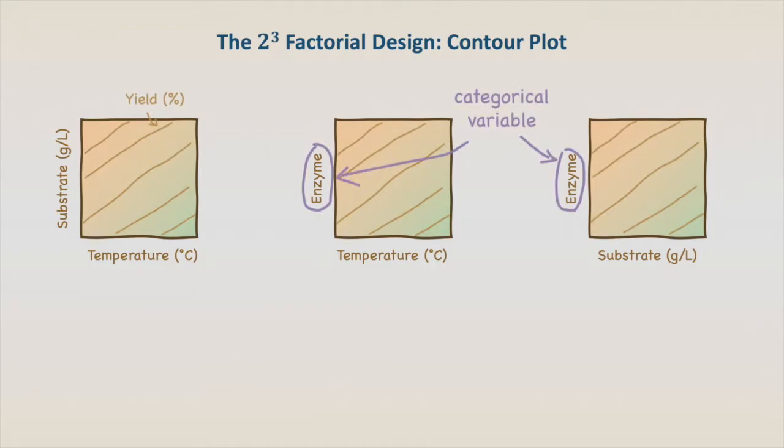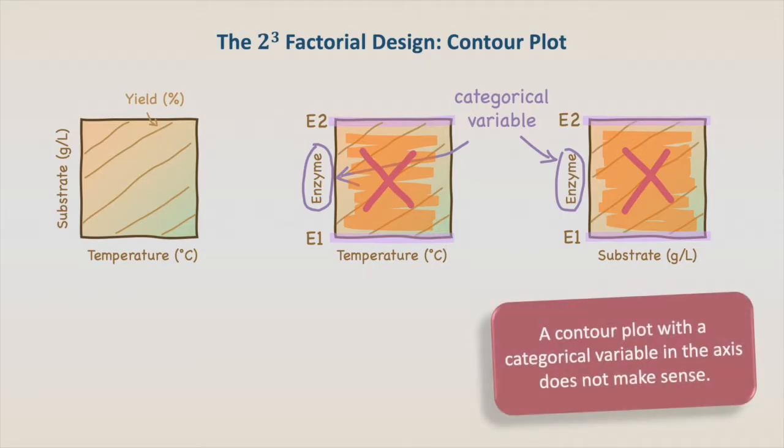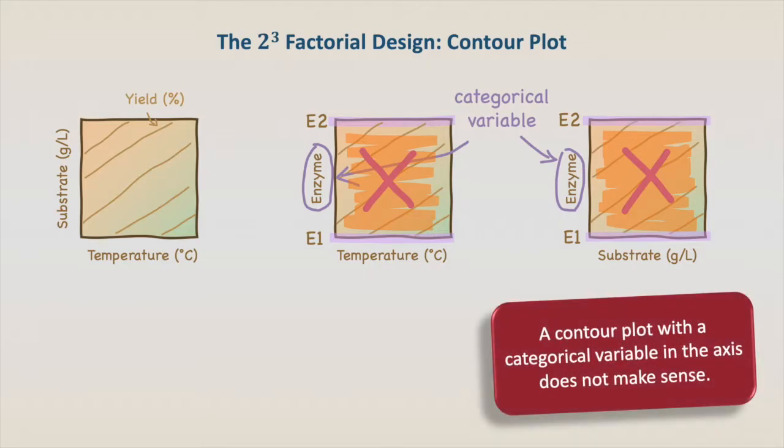However, we must remember that the enzyme is a categorical variable. It can only assume two levels, E1 and E2. There is nothing in between E1 and E2. There is no enzyme 1.5. A contour plot with a categorical variable in the axis does not make sense.